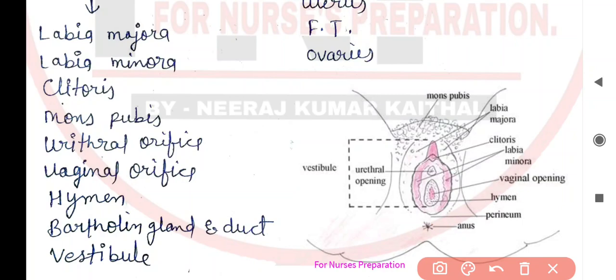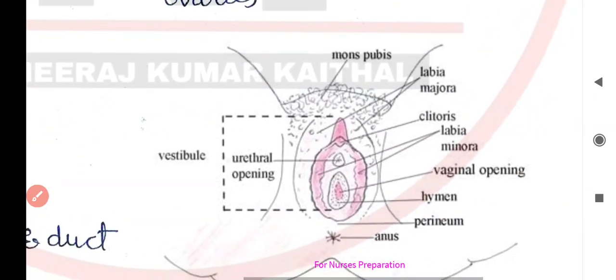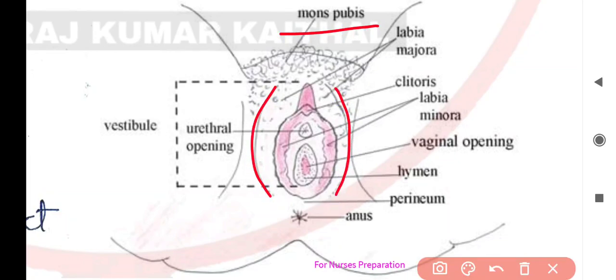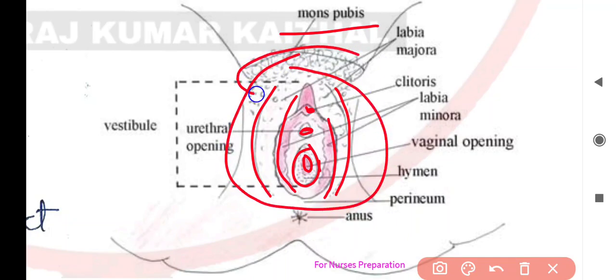So friends, ye the saare 9 structures — is diagram se aapko clear ho gaya hoga. Ek baar phir se revise kar lete hain: sabse upar triangular part mons pubis, outer covering labia majora, internal covering labia minora, clitoris, urethral opening, vaginal opening, uske andar hymen, uske neeche perineum area jahan forkity muscles paaye jaate hain, phir neeche aata hai anus, aur is poore area ko vestibule kehte hain, upper portion mons pubis.